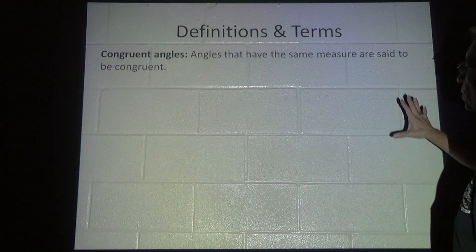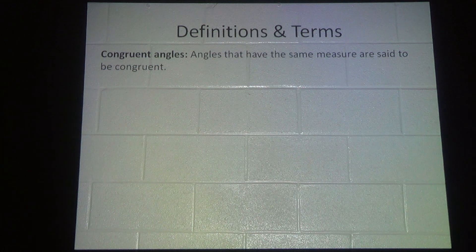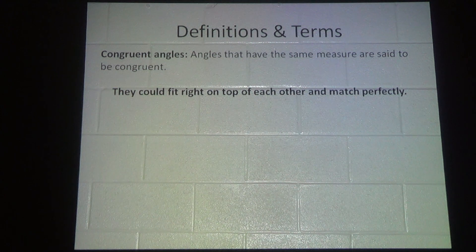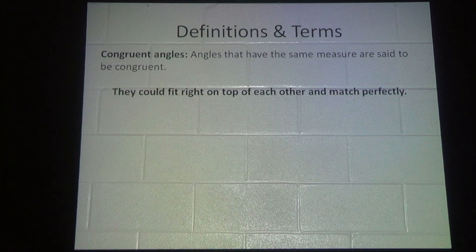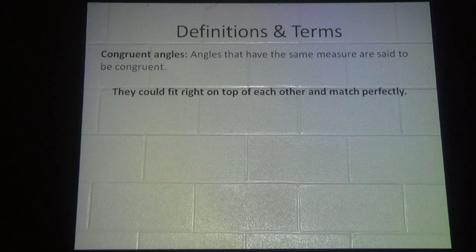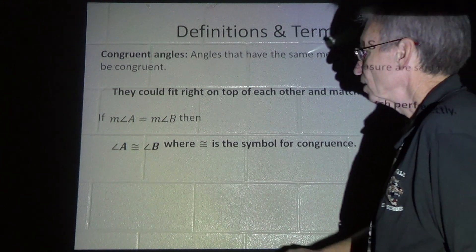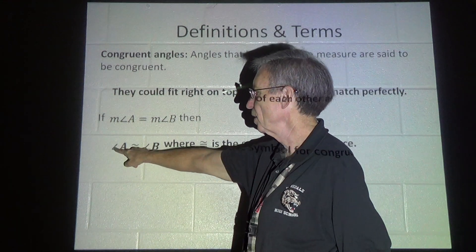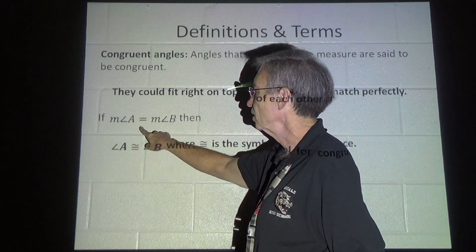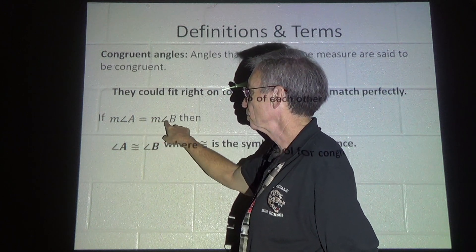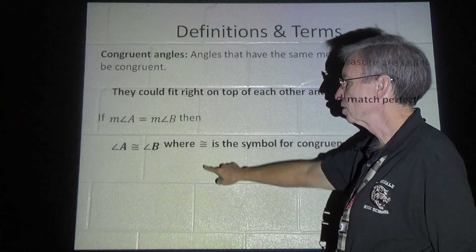Congruent angles just simply mean that you have more than one angle that has the same measurement. If they have the same measurement, they are congruent. If the measure of angle A is equal to the measure of angle B, then angle A is congruent to angle B. Notice that we don't have the measure here when we're talking about the object. When we're talking about the measurement, the actual number, we use the symbol equals. This symbol right here is the symbol for congruence.